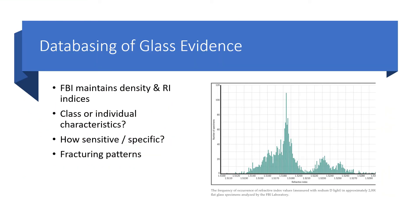The FBI maintains a density and refractive index database for glass. So when you're taking those refractive indices, even if you don't have an abundance of other evidence or a very good standard reference sample to characterize it, you can rely on those databases to at least rule out something. You may find a match, but it doesn't necessarily mean it came from that thing — this is a class characteristic type of thing.